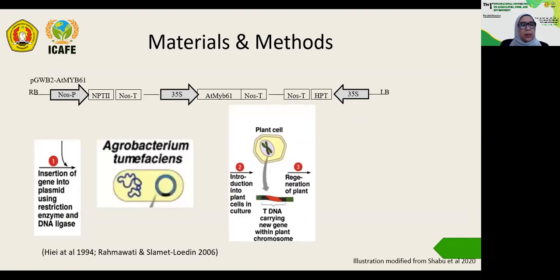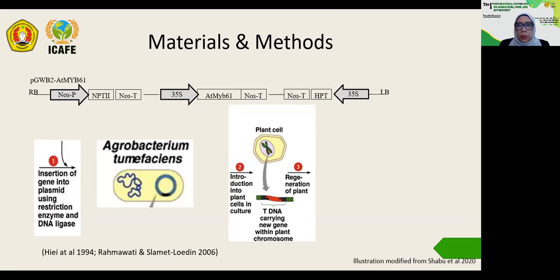For materials and methods, this is the typical process of gene transformation mediated by Agrobacterium tumefaciens. There are three main steps. First, preparation of the Agrobacterium carrying the target gene. We use plasmid pGWB2 carrying the AtMYB61 gene under the control of the 35S promoter, kindly provided by Professor Umezawa from Rikkyo University. Another important component in the T-DNA region is the hygromycin phosphotransferase, or HPT, which serves as the selection gene.